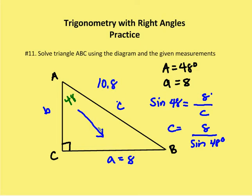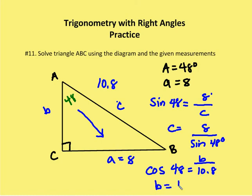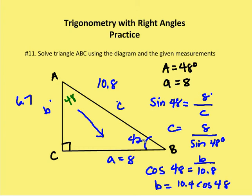We can use cosine to find B. The cosine of 48 degrees equals the adjacent side B over 10.8, so B equals 10.8 times the cosine of 48 degrees. Typing that into the calculator gives approximately 6.7. To find angle B, we use the fact that the sum of all angles in a triangle is 180 degrees: 90 plus 48 leaves 42. So angle B is 42 degrees, and we've now solved all remaining values for this triangle.